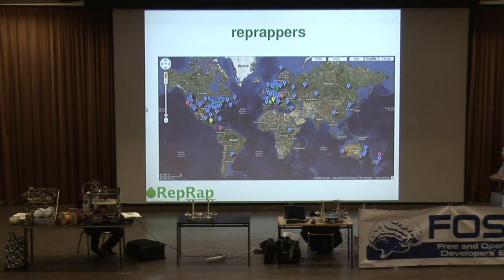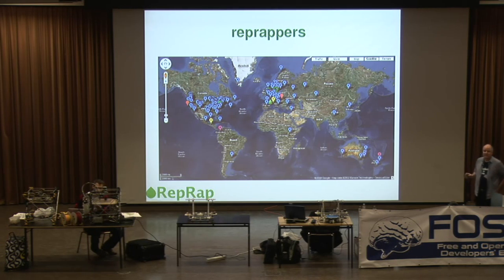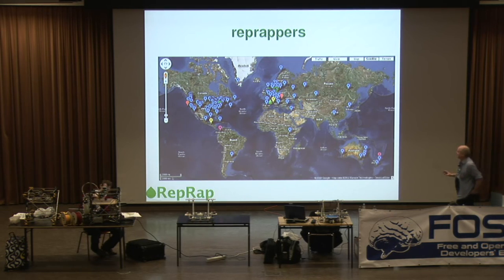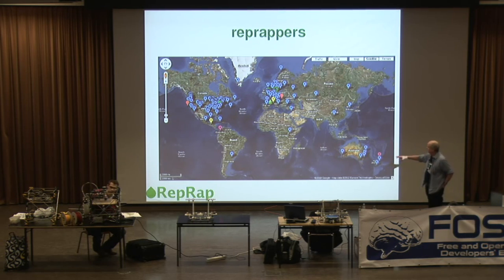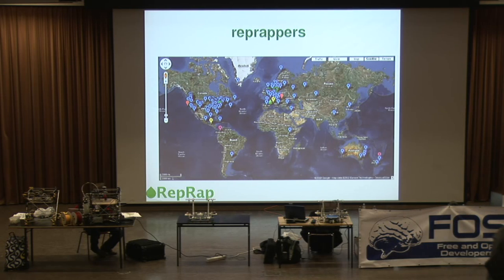Here's a little map. When people start putting machines together, we invite them to put a pin on the Google map. This is by no means all of the people involved in building these machines — just the ones who could be bothered to put a pin on the map — but it gives you an idea of the distribution. Unsurprisingly, Europe and North America have pretty dense populations, but they're starting to appear in South America, Africa, Eastern Asia, and there's another concentration in Australia and New Zealand. That's a snapshot from about two months ago.